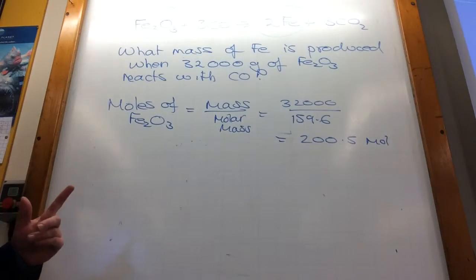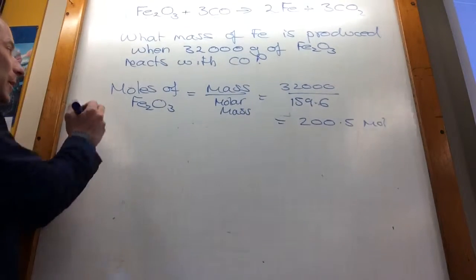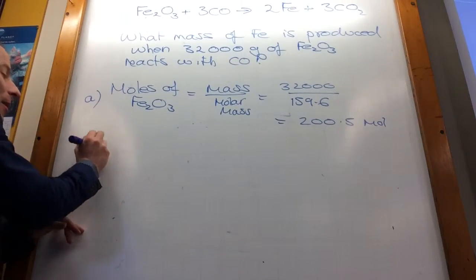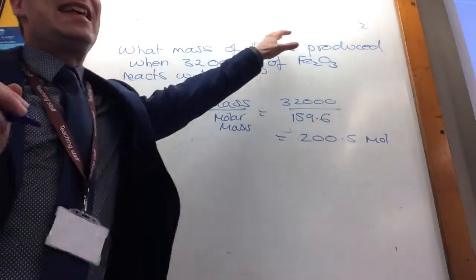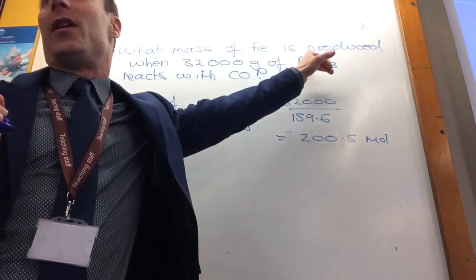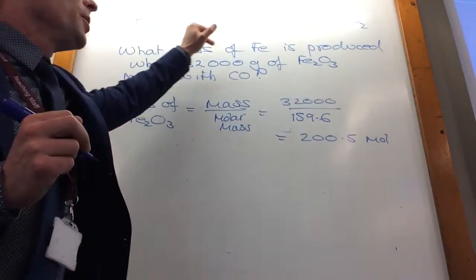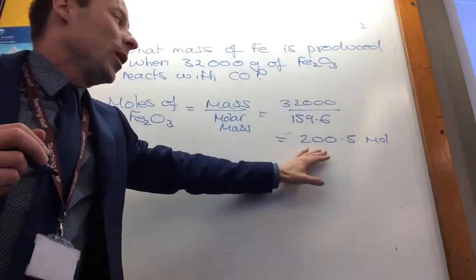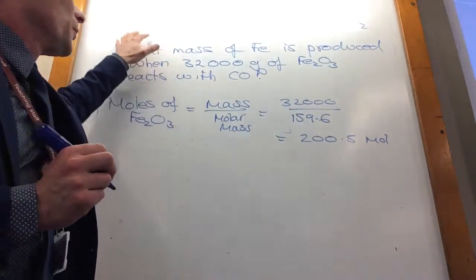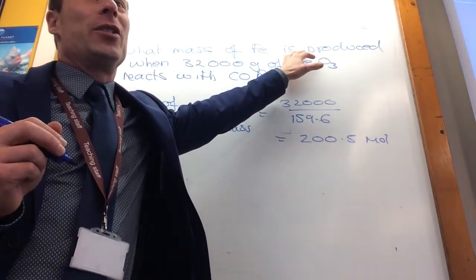This is where the tricky bit comes, but you'd be okay. So that was the first bit. The next bit, I find the moles of iron oxide, but I need to relate that to the moles of iron. For every one of those, I make two of those. So if I've got 200.5 moles of that, how many of those am I going to make?